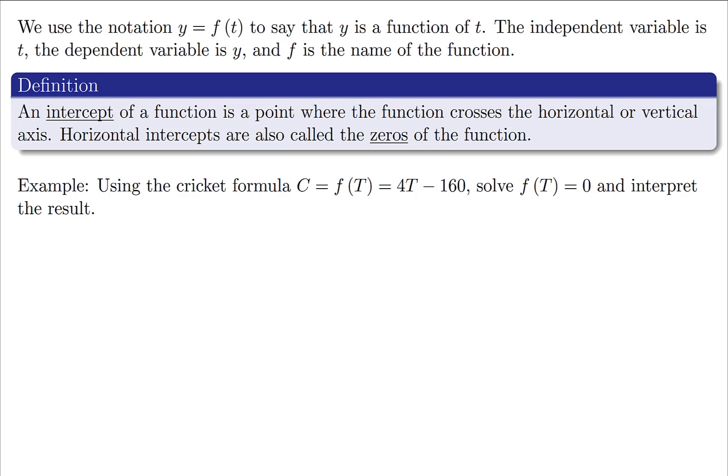Now let's take an example of this. Here's your cricket formula that we had a minute ago. This is a function of t where t was the temperature in Fahrenheit. We're going to set f(t) equal to zero and interpret this result. So that means I need to take the equation 4T - 160 = 0. Using a bit of algebra, I'll add 160 to both sides which gives me 4T = 160, and then I can divide by 4 to get 40.